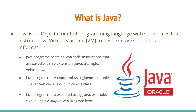You run Java programs using the java command — for example: java vehicle. What this does is it takes vehicle.class, which contains the set of instructions we wrote in vehicle.java, and runs or executes those instructions on the computer or Java Virtual Machine.